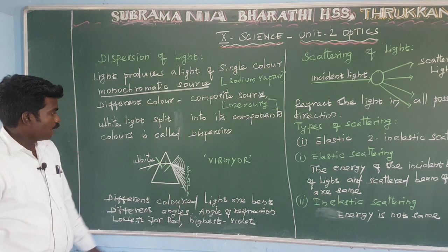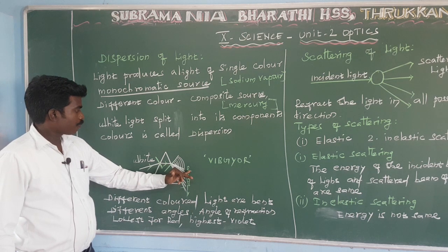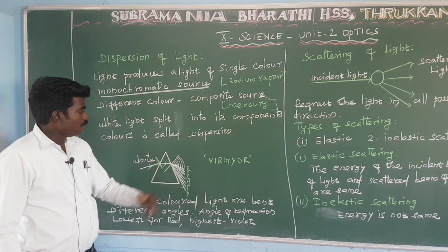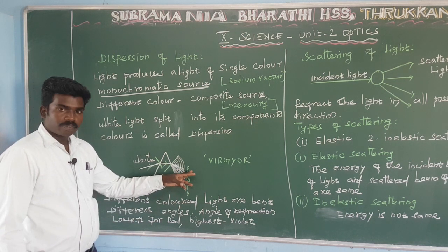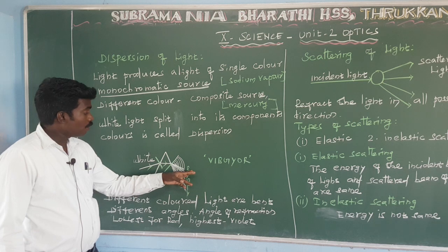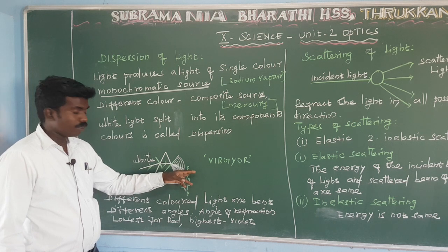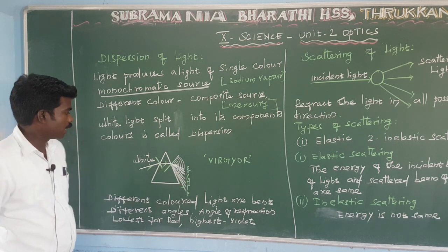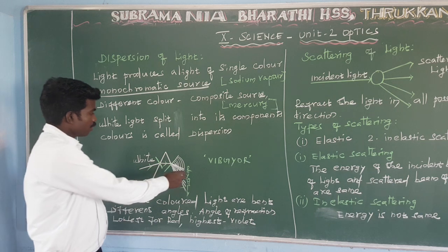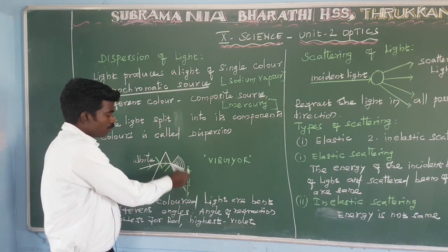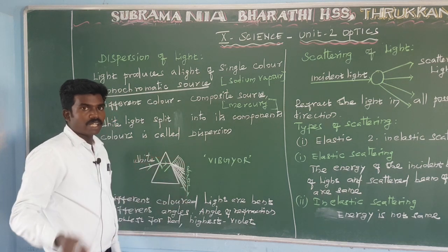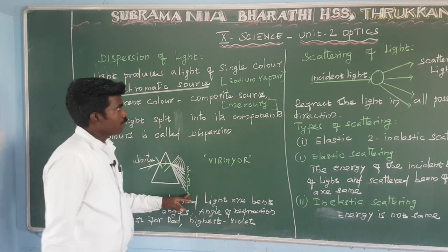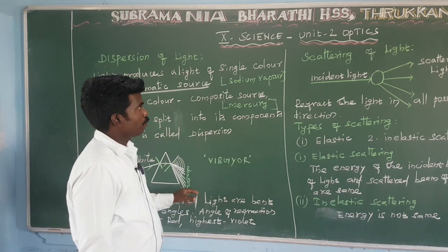Wavelength is maximum for red, and since the angle of refraction is low for red, wavelength maximum corresponds to least bending. That means wavelength is minimum for violet.